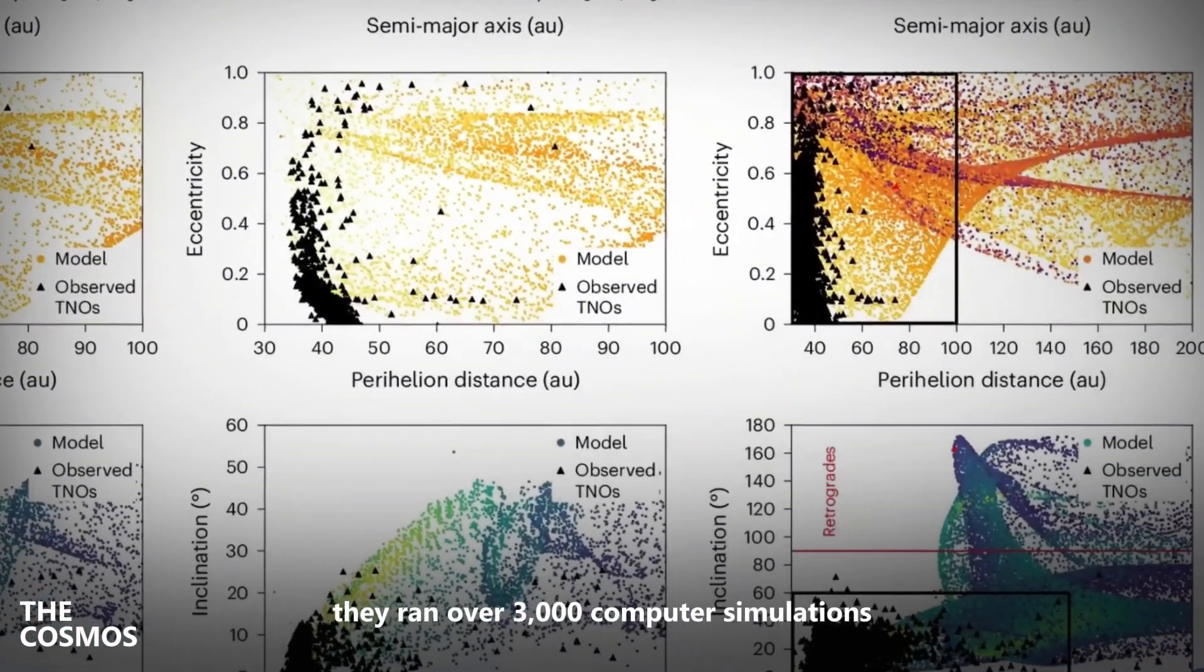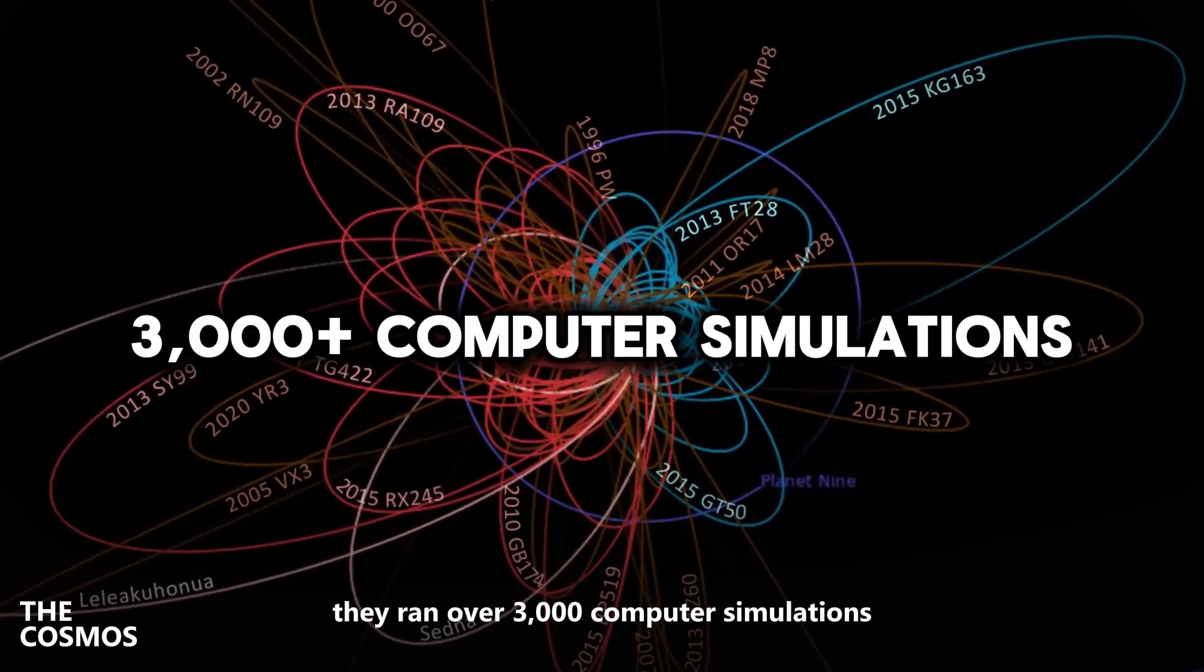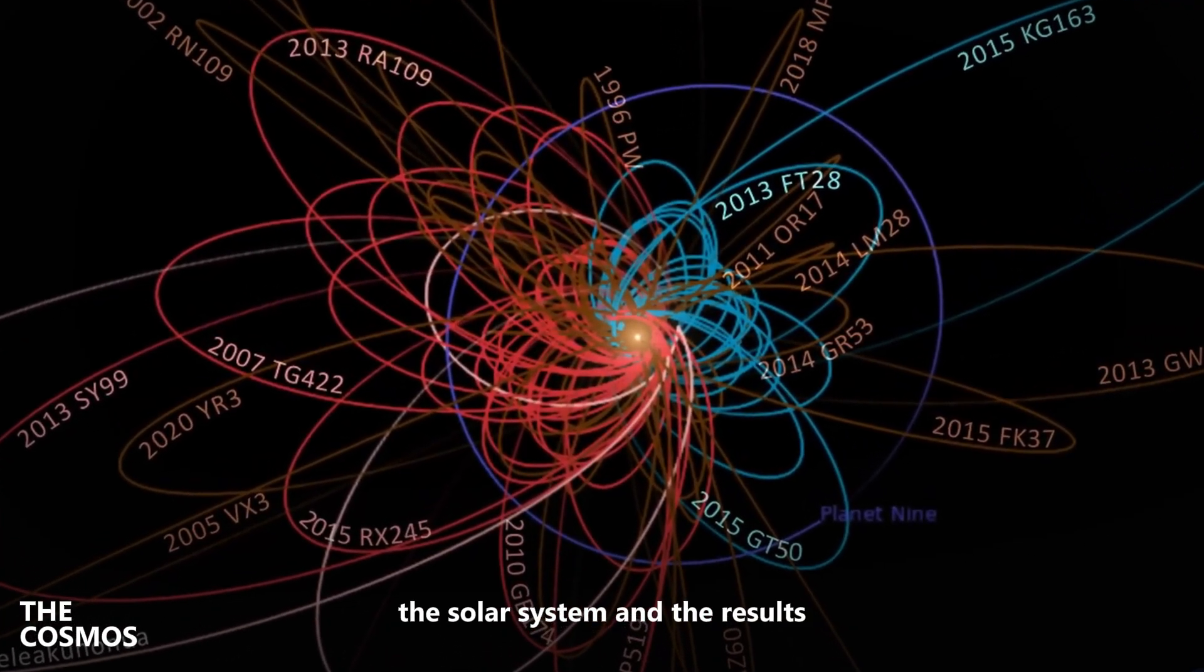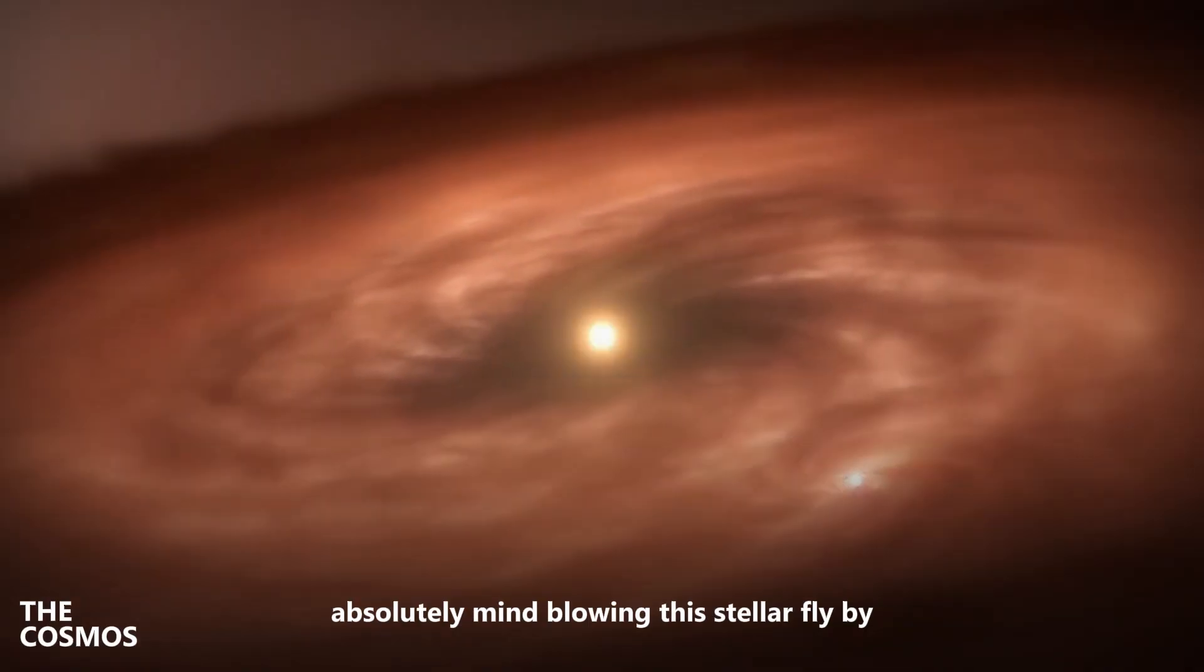They ran over 3,000 computer simulations to figure out how such a close encounter could have affected the solar system. And the results? Absolutely mind-blowing.